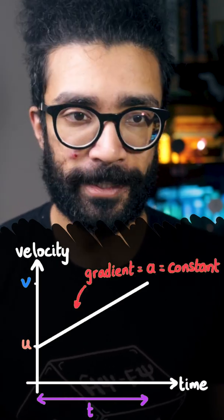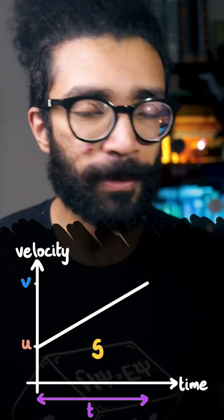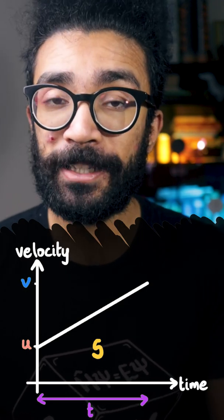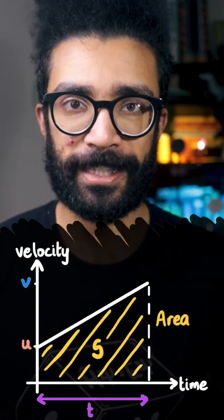The constant slope or gradient confirms this fact. At this point we can note that the displacement of the object, the total distance it covers along a straight line, is given by finding the area underneath our velocity-time graph.